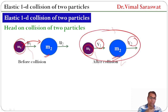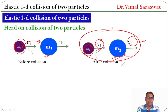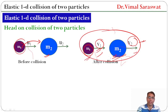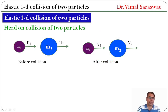After collision, the velocity of particle M2, that is V2, is greater than V1. If V1 were greater than V2, then again this particle would collide with this particle. So after collision, V2 is greater than V1.